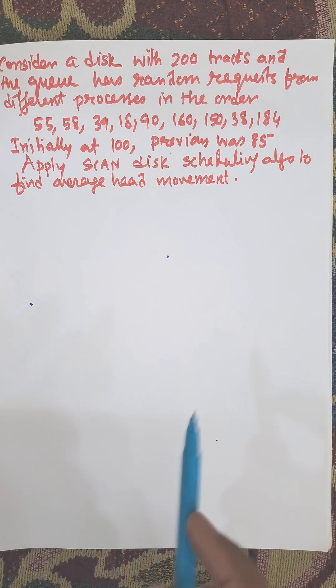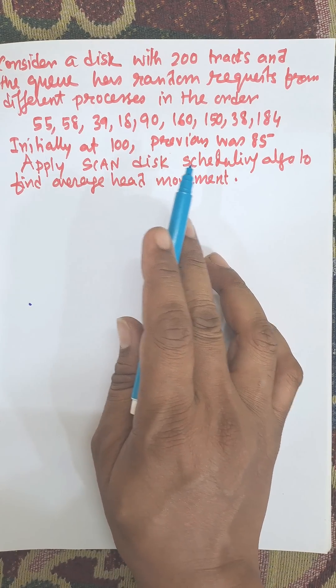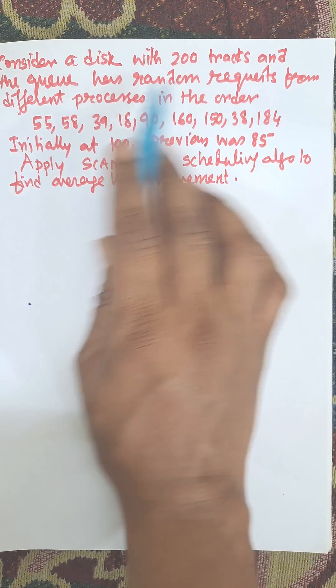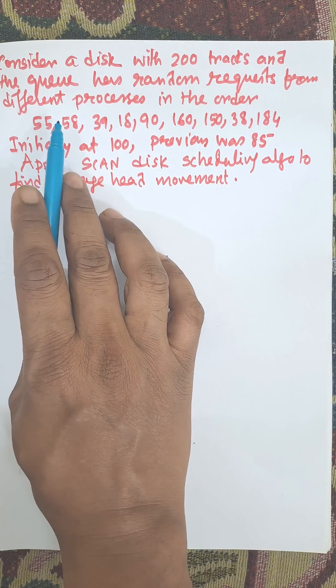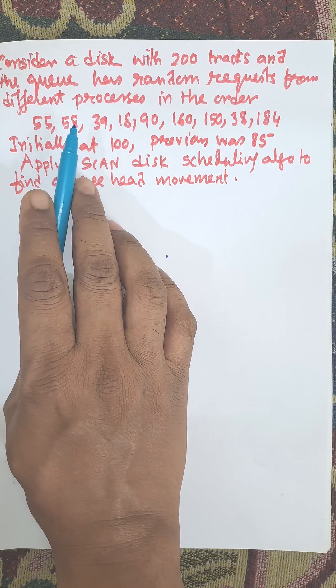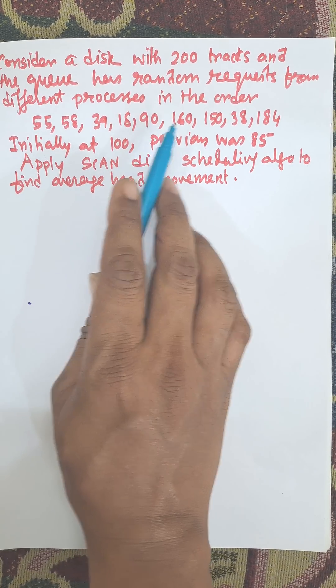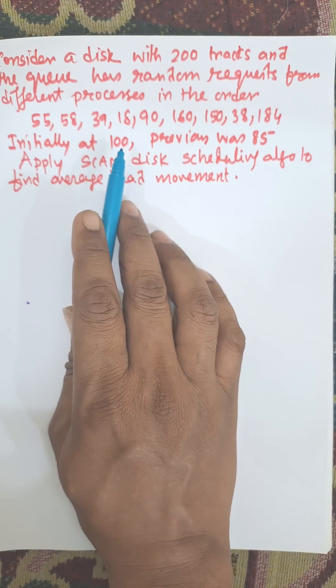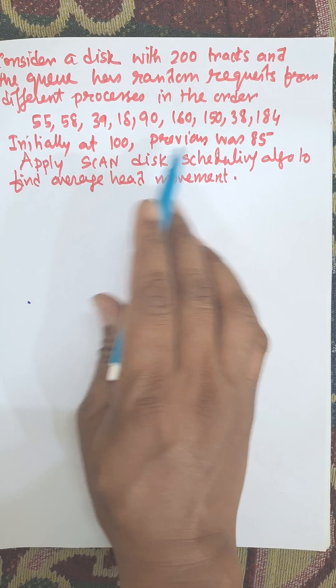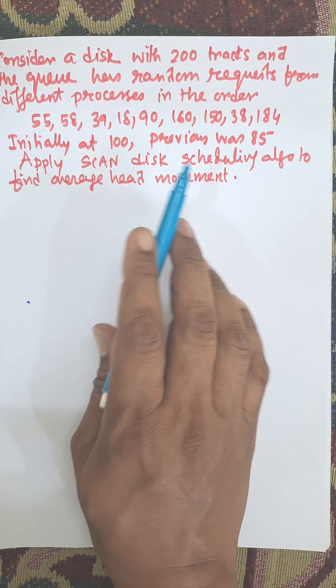Everybody, in this video I am going to discuss SCAN disk scheduling algorithm. Consider a disk with 200 tracks and the queue has random requests from different processes in the order: 55, 58, 39, 18, 90, 160, 150, 38, 184. Initially at 100, previous was 85. Apply SCAN disk scheduling algorithm to find average head movement.